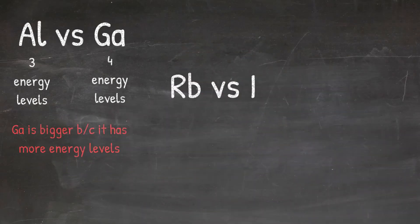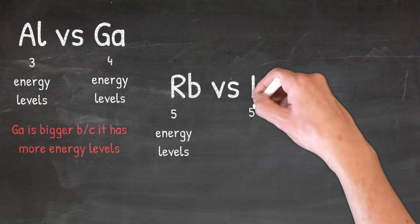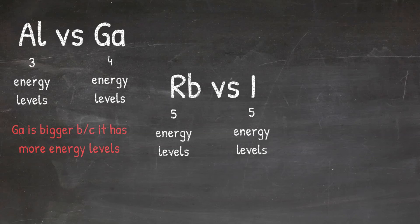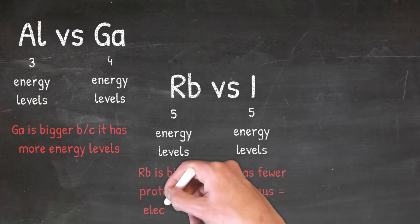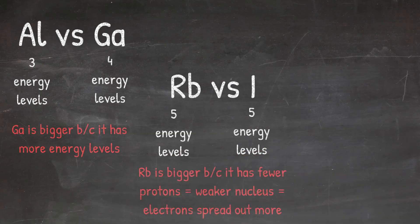In our next example, we can look at rubidium versus iodine. Looking at the energy levels will be the first thing to consider. Both of these are in the fifth period on the periodic table, so they both have five energy levels. Whenever energy levels are the same, you're going to want to then look at the strength of the nucleus, which is related to the number of protons. Rubidium is going to be bigger because it has fewer protons than iodine, and that means rubidium has a weaker nucleus, which causes the electrons to spread out more.